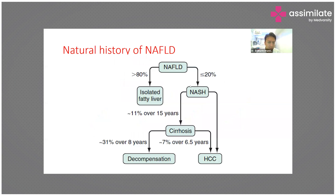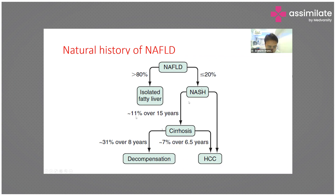The natural history of fatty liver is such that 80 percent of people will have isolated fatty liver, placing them at increased risk of metabolic complications — insulin resistance, diabetes, and hypertension. However, 20 percent will develop NASH, a significant proportion. Over 15 years, up to 11 percent will progress to compensated cirrhosis, which can then decompensate or progress to hepatocellular carcinoma.